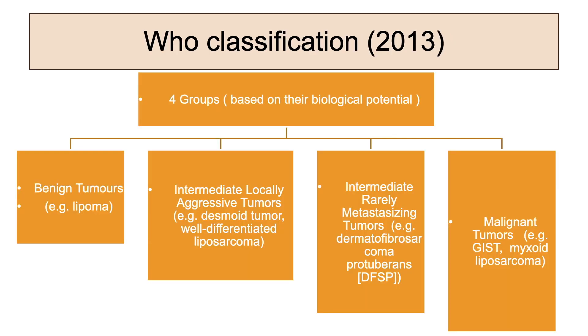On the basis of WHO classification, soft tissue tumors are divided into four broad groups: benign tumors, intermediate locally aggressive tumors, intermediate rarely metastasizing tumors, and malignant tumors.